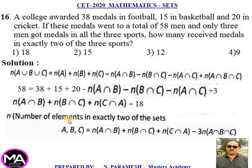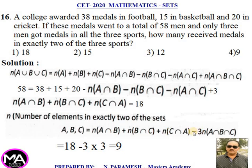Number of elements in exactly two of the sets = N(A∩B) + N(B∩C) + N(C∩A) − 3·N(A∩B∩C) = 18 − 3×3 = 18 − 9 = 9. That is option fourth.